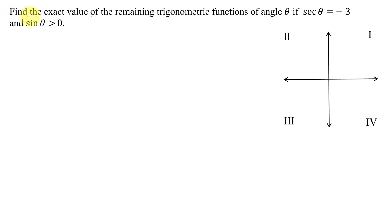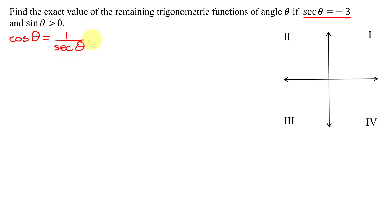In this example, I need to find the exact value of the remaining trigonometric functions for angle theta if the secant of theta equals negative 3 and the sine of theta is greater than 0. The easiest trig function to find is the reciprocal of the secant — that's the cosine. So the cosine of theta is 1 divided by the secant of theta, which is 1 divided by negative 3. We never leave a negative in the denominator, so we write the answer as negative 1 third.